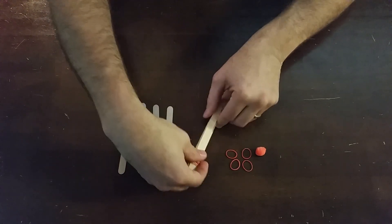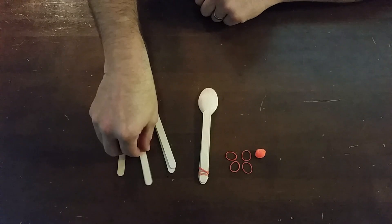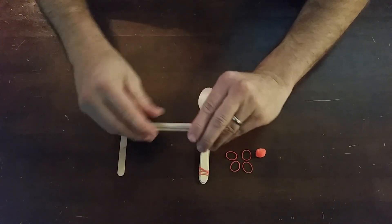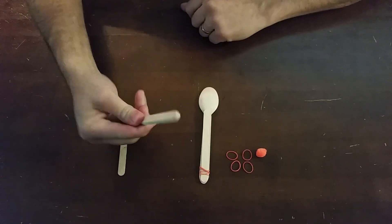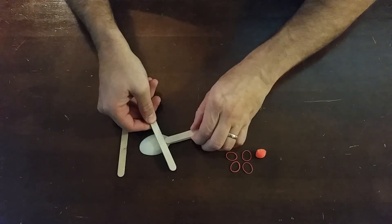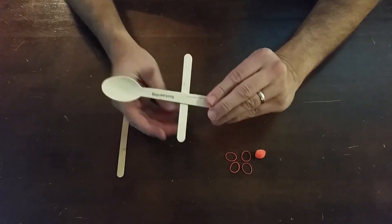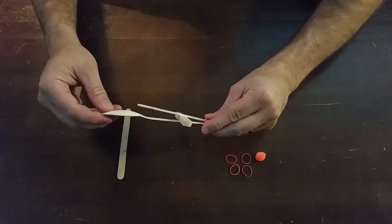The next step is we're going to put that down for a second and gather up three of the additional popsicle sticks and stack them on top of each other like this. Then we're going to slide those inside the catapult like this, so those three sticks go crossways in the catapult.